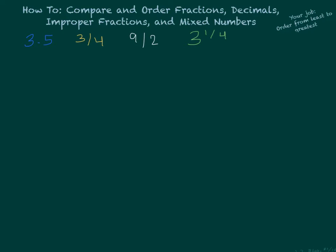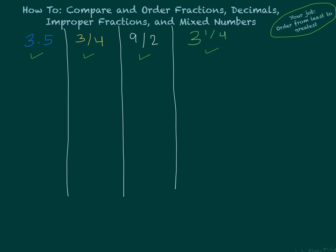We have the following numbers on the screen here, and our job is to put them in order from least to greatest. And we have the following numbers. We have 3 and a half, or 3 and 5 tenths, that's the decimal, the fraction 3 fourths, improper fraction 9 halves, and the mixed number 3 and 1 fourth. Grab a piece of paper and make sure you're doing this with me. I'm just going to draw some lines to kind of line up my numbers and do my work.